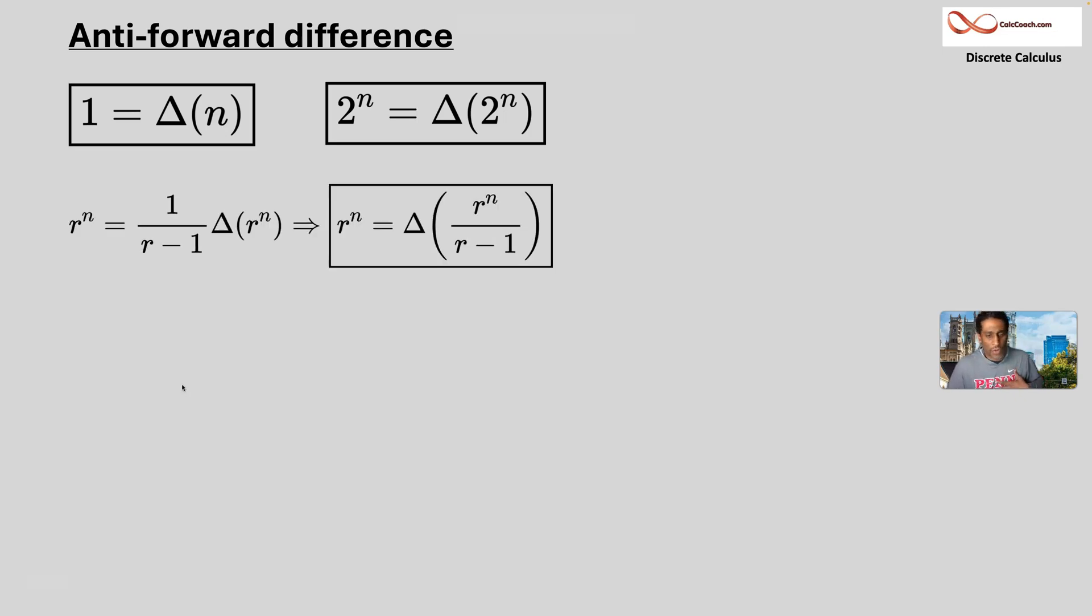The forward difference on r to the n is r to the n times the quantity of r minus one, which we can just take that constant and divide by it. And if you have a constant outside of a forward difference, you could bring it inside. And so r to the n is equal to the forward difference on r to the n over r minus one.